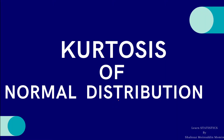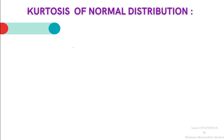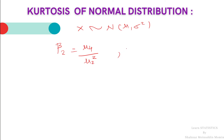Now we will start with the kurtosis of normal distribution. In kurtosis we study the peakness of a frequency distribution — that is, how peaked the frequency distribution is. If X follows a normal distribution with parameters mu and sigma squared, then the coefficient of kurtosis beta 2 is defined as beta 2 equal to mu 4 divided by mu 2 squared. Kurtosis can also be measured by gamma 2, which is equal to beta 2 minus 3.